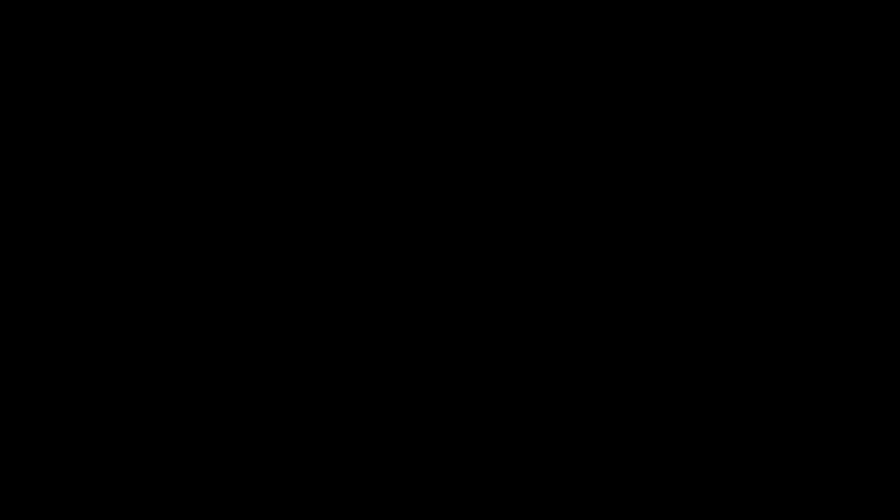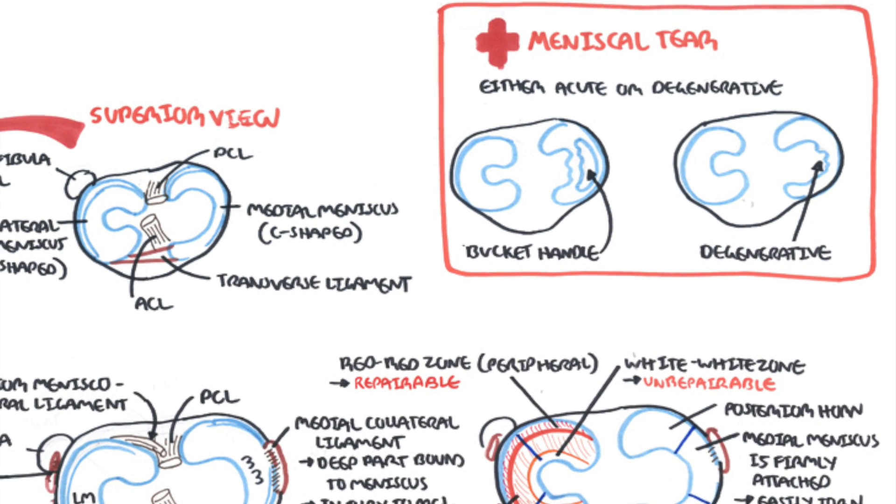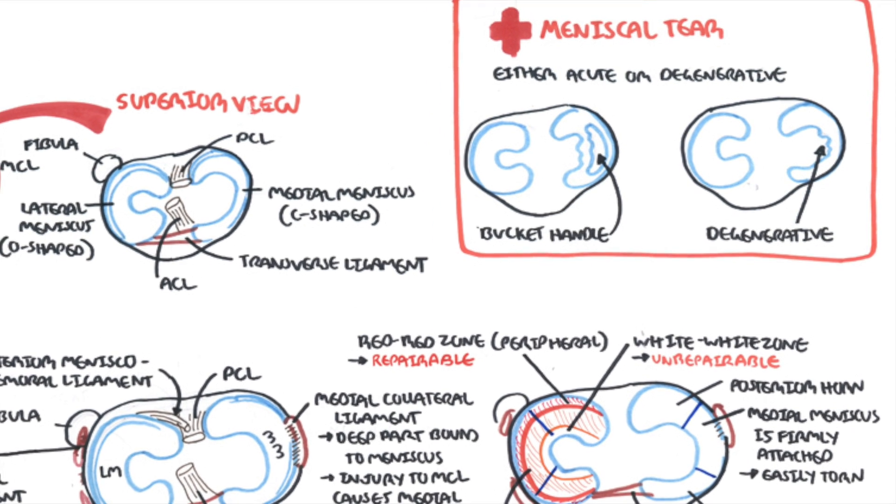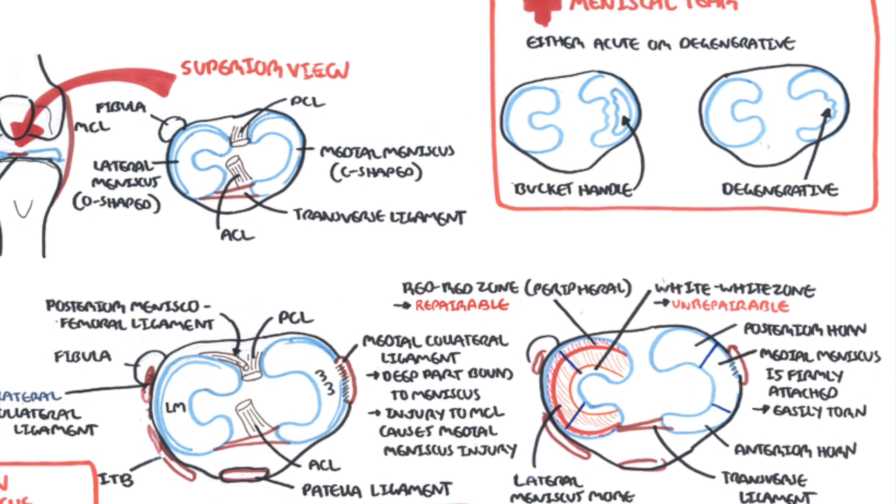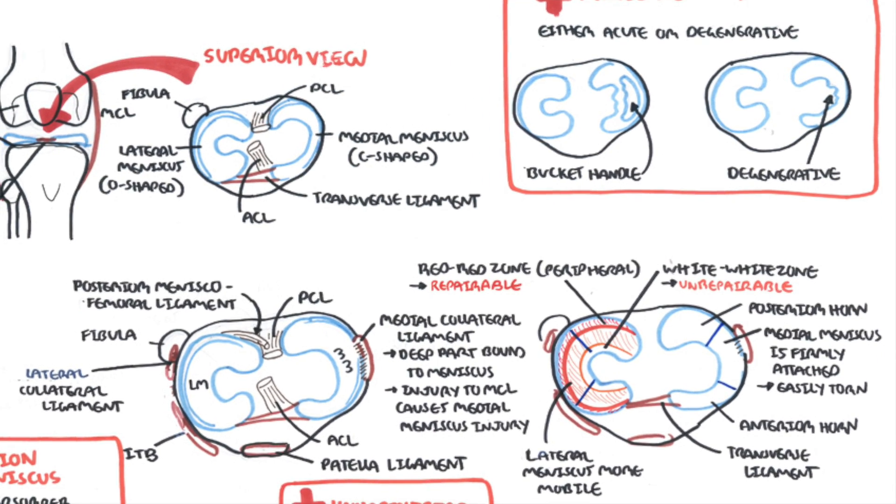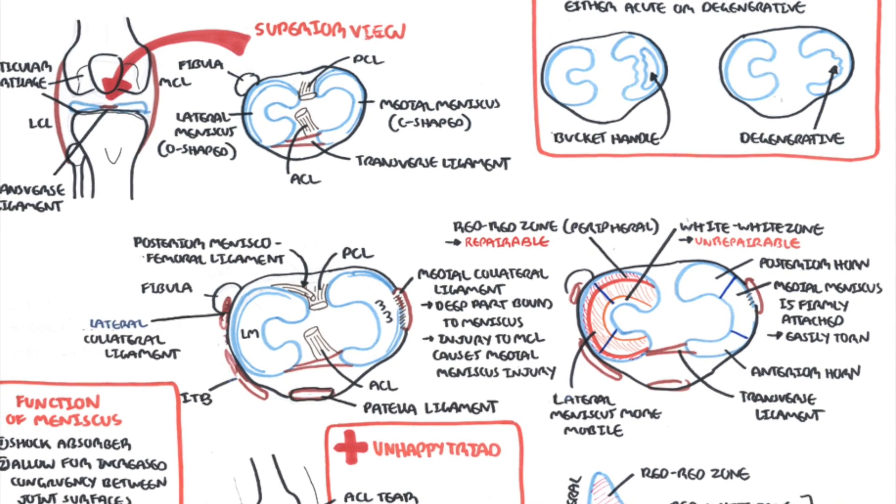These injuries can present with the sensation of catching or the knees locking. Knee locking is essentially where the torn meniscus, if it is big enough, can get caught between the tibia and the femur bone. And this is known as the locking sensation or the knees catching.